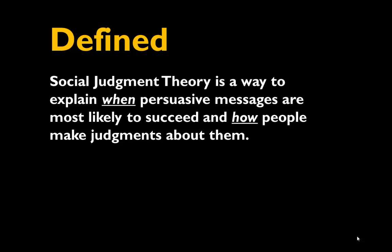Hey everyone, this week we're talking about social judgment theory. This is one of the theories that's based in the field of psychology, and basically it explains when persuasive messages are most likely to succeed and how people make judgments about them. It assumes that people bring prior attitudes to an issue and that those attitudes distort the way they perceive persuasive messages.